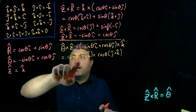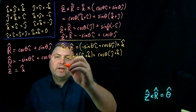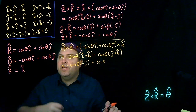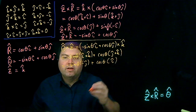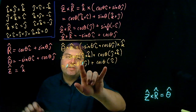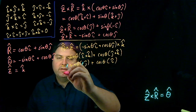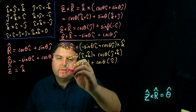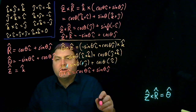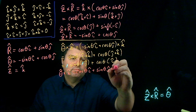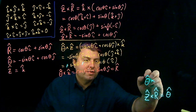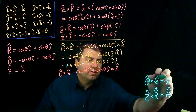Using the table again: î × K̂ = −ĵ, so I have −sinθ times −ĵ. Then cosθ (ĵ × K̂), and ĵ × K̂ = î. The two negatives cancel nicely. Rearranging: cosθ î + sinθ ĵ — that's R̂. So θ̂ × Ẑ = R̂.